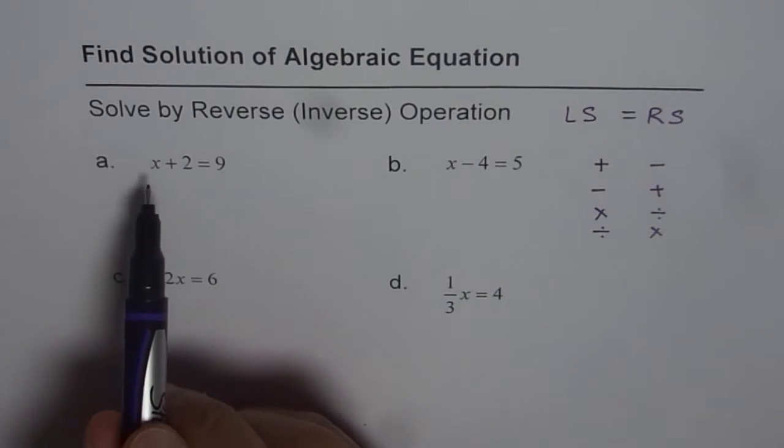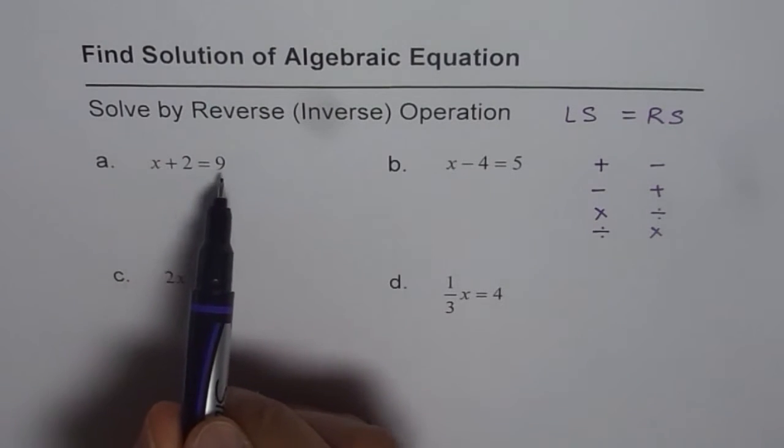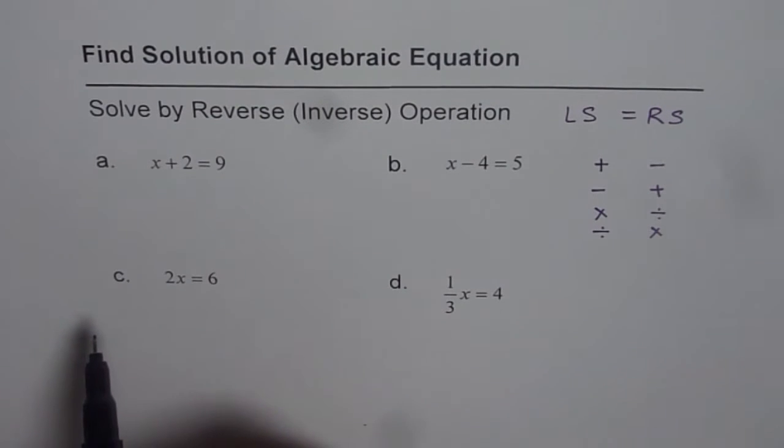The equation is x plus 2 equals 9. That's very simple - x should be 7, right? You can solve it by inspection. But the whole idea is to learn a method. If we learn a method, we can solve complicated equations. We have simple examples and simple steps to follow. Let's look into these steps carefully.